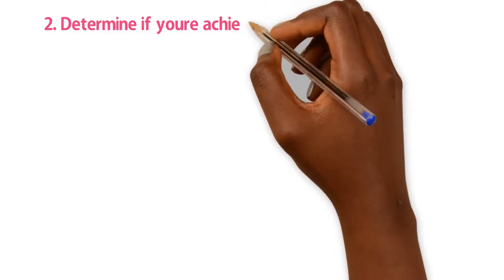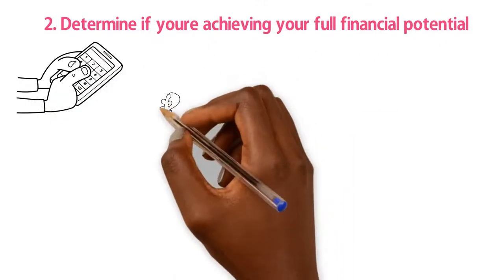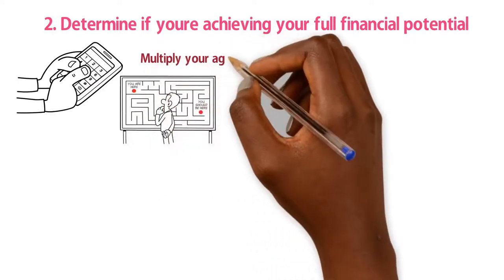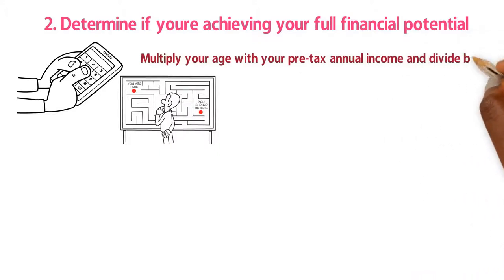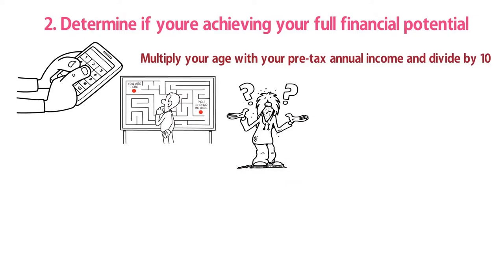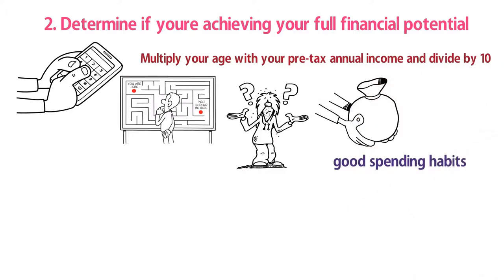Rule number two: Determine if you're achieving your full financial potential. You can calculate if you're not reaching your full financial potential with this simple equation. Multiply your age with your pre-tax annual income and divide that by 10. Whatever this number is reflects how rich you could be right now if you've already cultivated good spending habits.